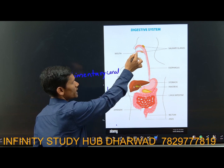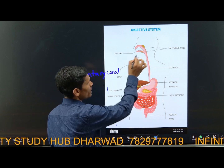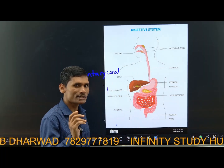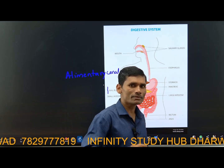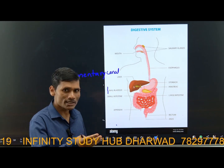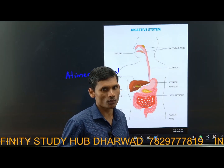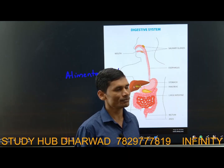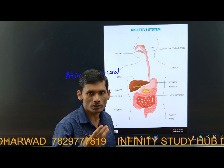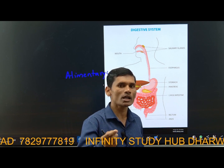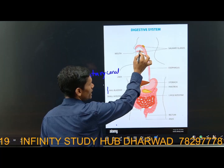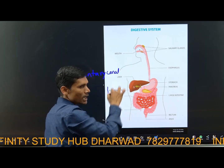Coming to the first part: buccal cavity. Buccal cavity consists of two things — tongue and teeth. Teeth help in chewing the food, grinding it to make it into powder form — this is mechanical digestion, not chemical. It is just changing food to powder or paste form. Saliva is secreted from salivary glands located below the tongue. The tongue is a muscular organ which helps to mix the saliva with the food.